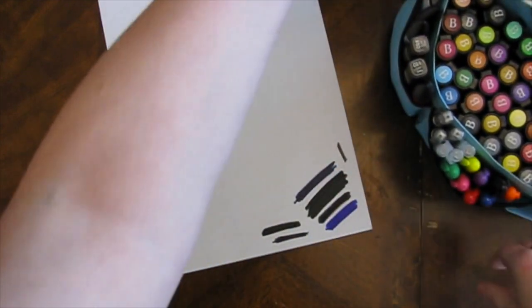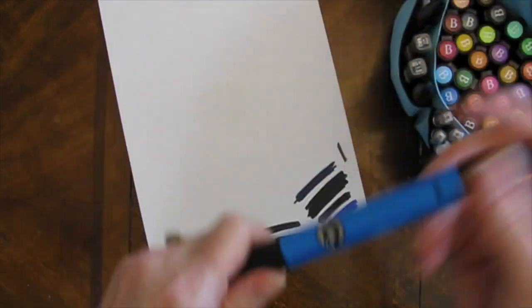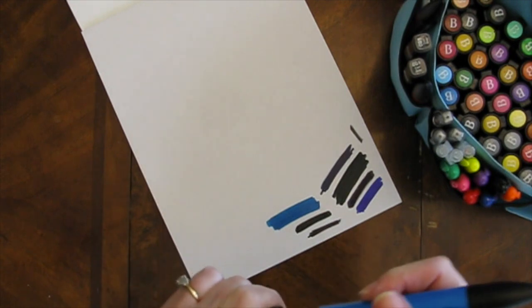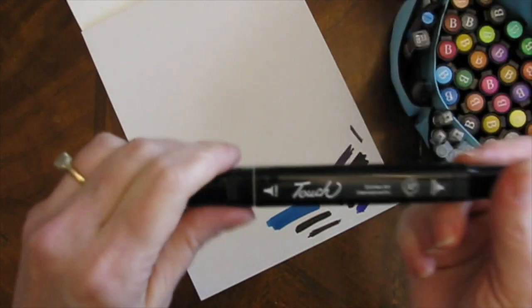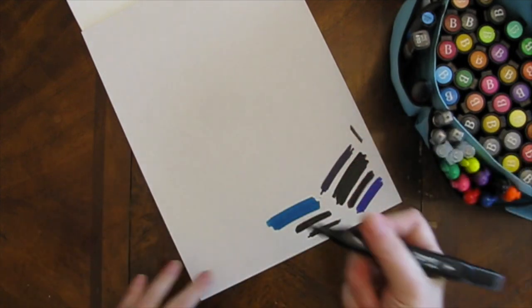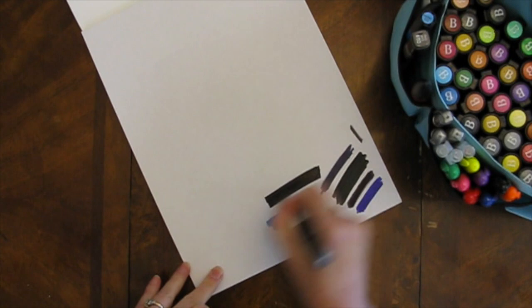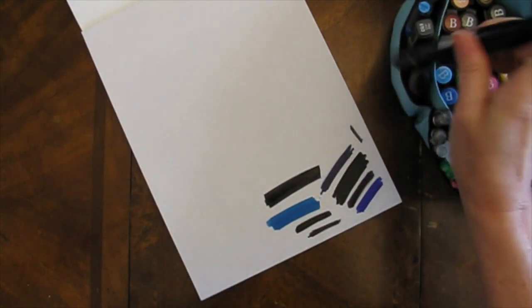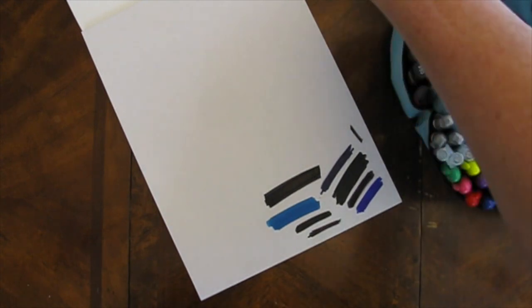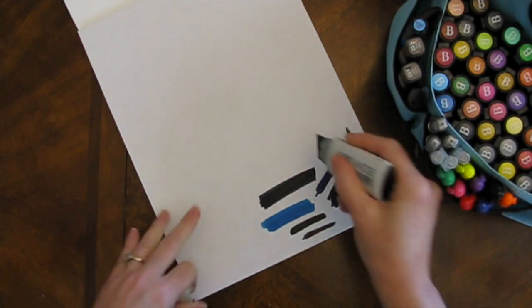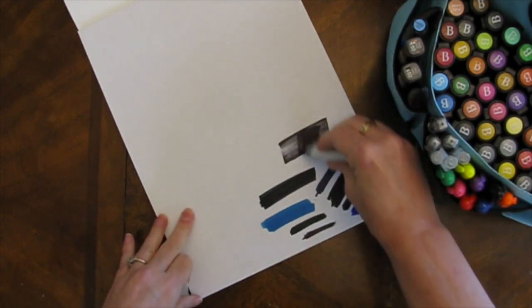And how about a Tria marker, a Shinhan touch marker. What else do we have? Here's a black, extra-wide Copic. Oh yeah, I think I've almost used this one up.